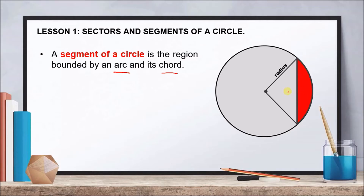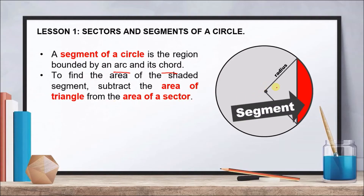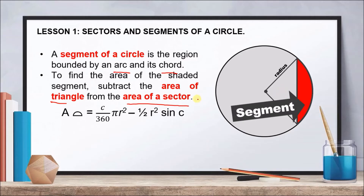The red portion in the drawing is the segment of our circle. To find the area of the shaded segment, we subtract the area of the triangle from the area of the sector. First, find the area of the sector (the slice of pizza shape), then find the area of the triangle inside it, and subtract — that gives us the area of the segment.